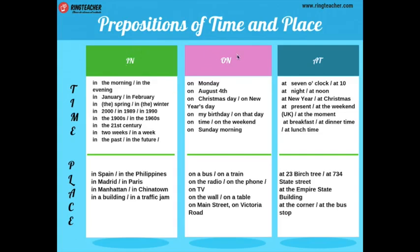Vamos a aprender a utilizar la preposición on. On Monday — para el lunes. On August — para agosto. Para fechas específicas también se puede usar on: on Christmas Day, on New Year's Day — en Navidad, en el año nuevo. On my birthday, on that date — en mi cumpleaños. Para tiempos de días especiales, días específicos, pueden usar esta preposición on.